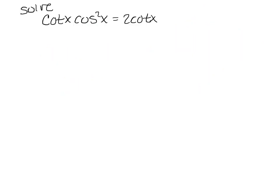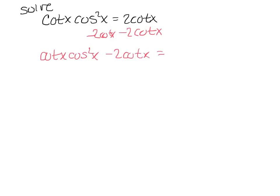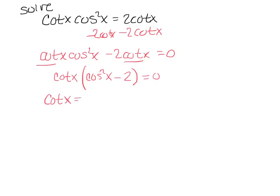On this solving problem, I want everything to equal 0, so I move the 2 cotangent over. I have cotangent x times cosine squared minus 2 cotangent x equals 0. Both terms have a cotangent I can factor out, which leaves cotangent x times (cosine squared minus 2) equals 0. The reason I want everything equal to 0 is so I can set each factor equal to 0 separately — 0 is the only number you can do that with.